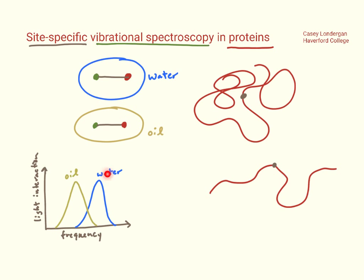So if we take these atoms that respond differently to different kinds of environments and we put them in the middle of proteins, as these proteins change their shape, these atoms end up in different environments and we will see changes in the spectrum. If we look at the inside of proteins, like in this example over here, we can learn things about chemistry that happens inside proteins.